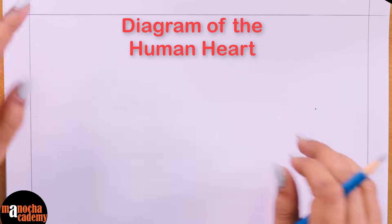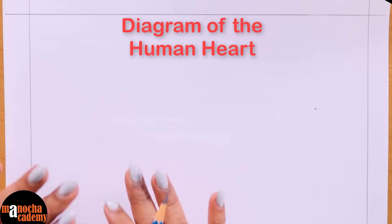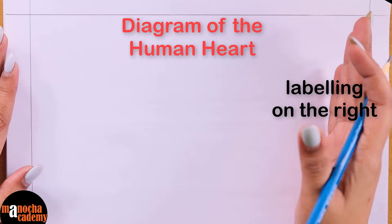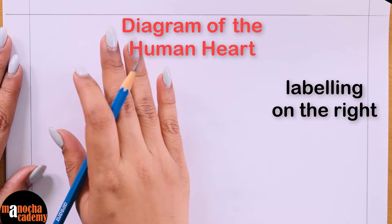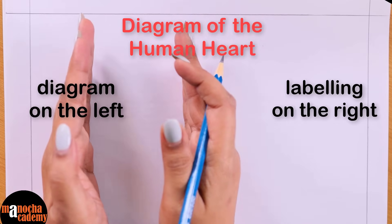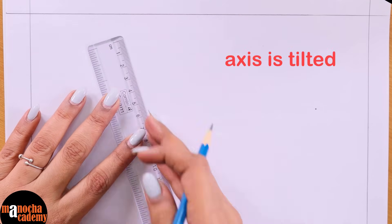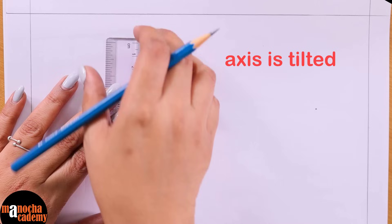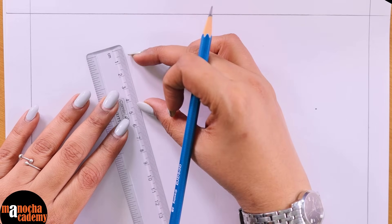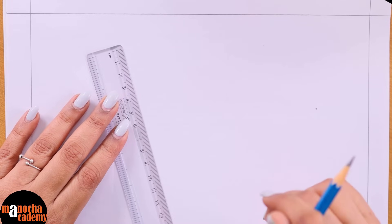We'll be drawing the diagram of the human heart. I have taken the page in landscape mode because I want to keep most of the labellings on the right hand side, and maybe one or two labellings on the left, but I will draw the diagram mostly off-center. For the diagram of the human heart you have to keep in mind two things: one, that the axis of the heart is tilted, it is not straight, so we will not draw the diagram straight. The axis should be slightly tilted, and two, the proportion of the size of the atrium to the ventricle has to be kept in mind.